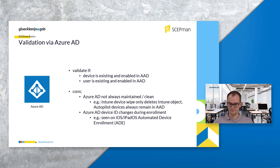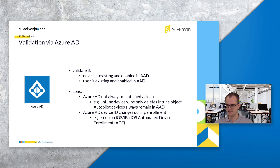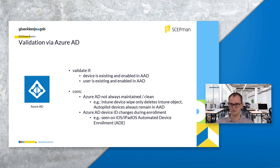As described, SCAPMAN currently only checks the Azure AD to see if the device exists there — and it will be there because no one deleted it from Azure AD. So the Azure AD is not always the perfect point to check whether a device is still valid or not.